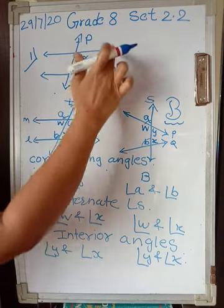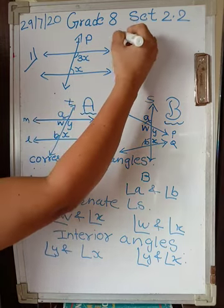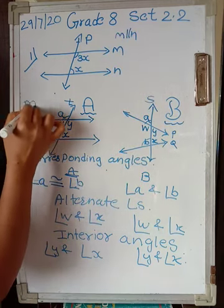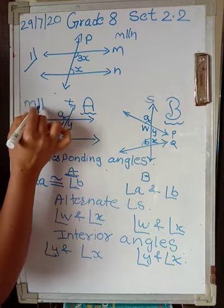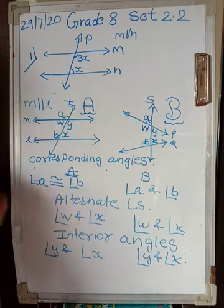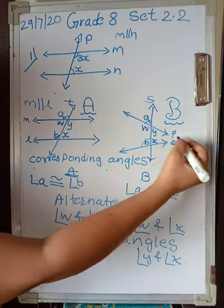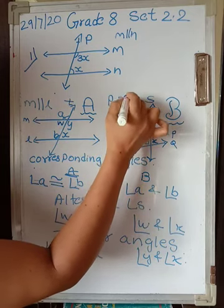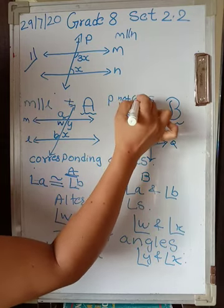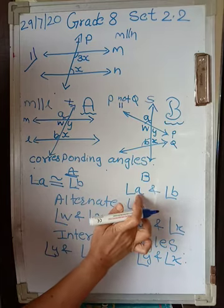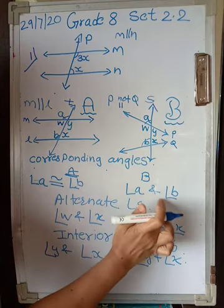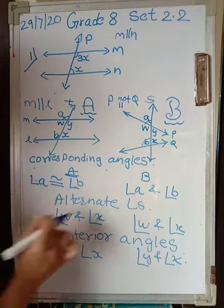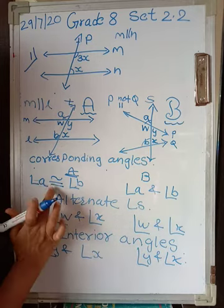In this case, M is parallel to L — I am writing the parallel sign here. Now for Case B, P is not parallel to Q, so angle A is not congruent to angle B. These angles are not congruent in Case B, but they are congruent in Case A.